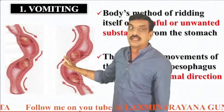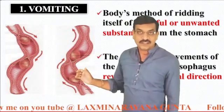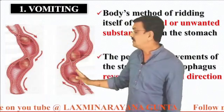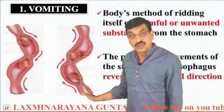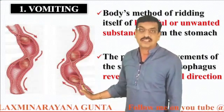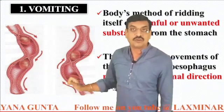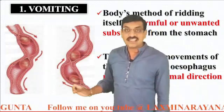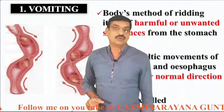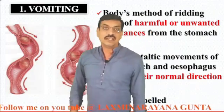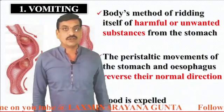During vomiting, the peristaltic movements get reversed. The circular muscles present below the food bolus contract, and the circular muscles present above the food bolus relax. As a result, the food is expelled out. This process is called vomiting.